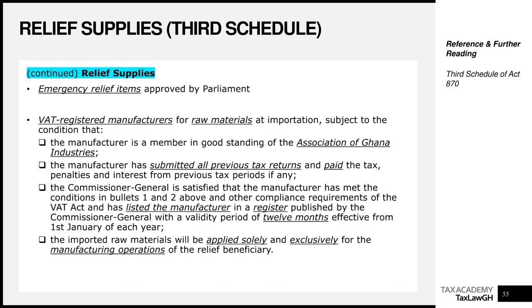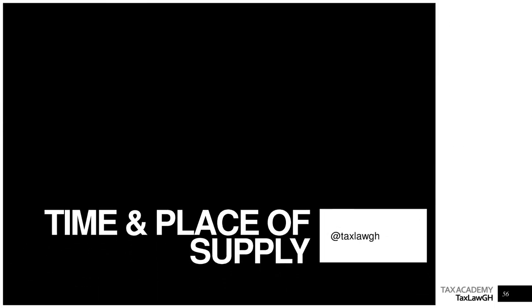Let's pause for a quick recap. In this session, we have looked at zero-rated supplies — what the law deems to be zero-rated — which are found on the second schedule to the VAT Act. We then looked at relief supplies, which are found on the third schedule of the VAT Act, along with examples of relief supplies. In our next video, we'll look at the rules concerning time of supply and place of supply — very important rules to know in order to establish when VAT is liable and where, if applicable.